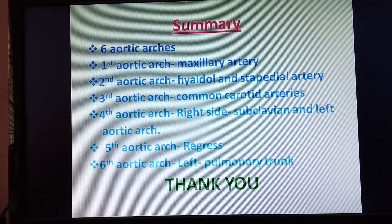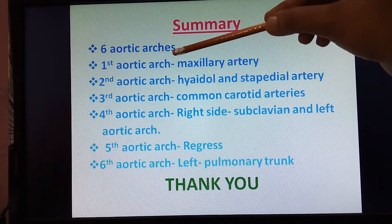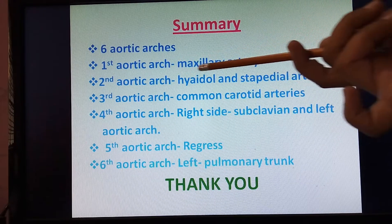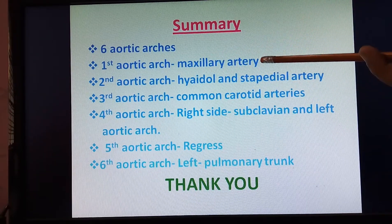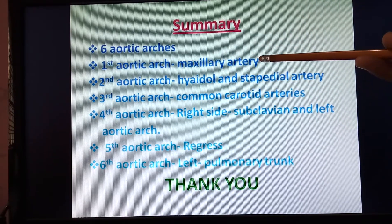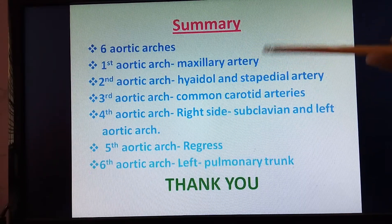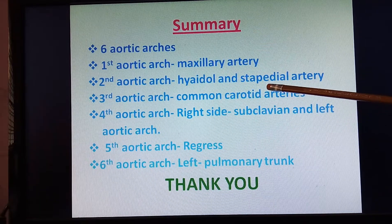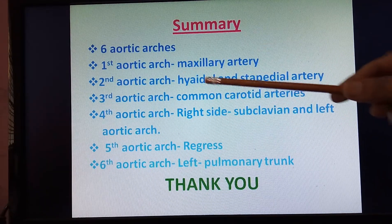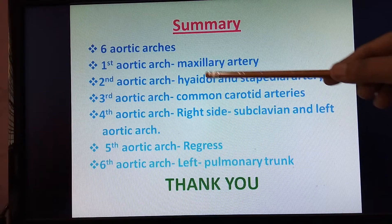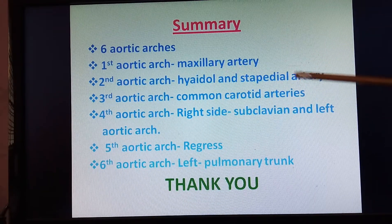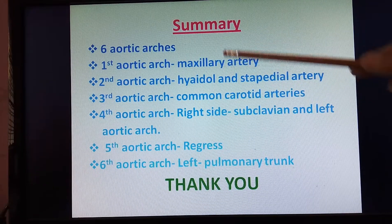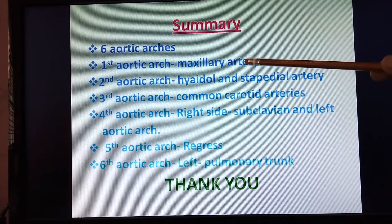To summarize: there are six aortic arches. The first aortic arch gives rise to the maxillary artery, supplying parts of the head, neck, and jaw. The second aortic arch gives rise to two arteries — the hyoidal artery, which supplies the pharynx, and the stapedial artery, which supplies the stapes of the ear. These are not major arteries and largely regress.